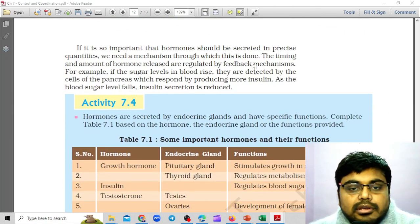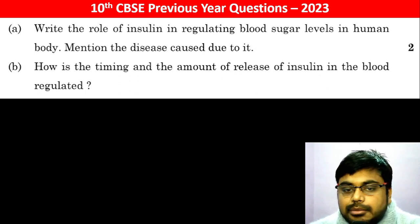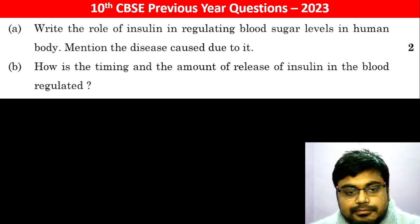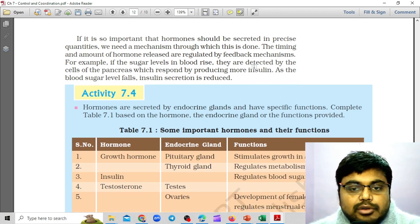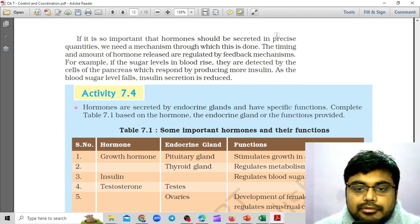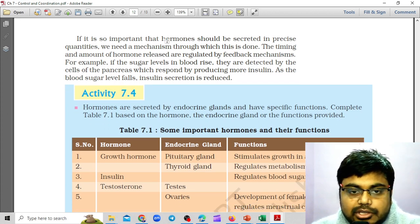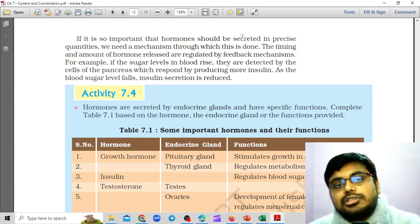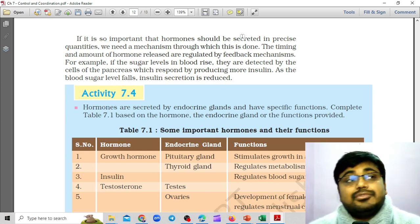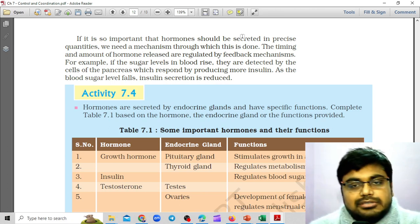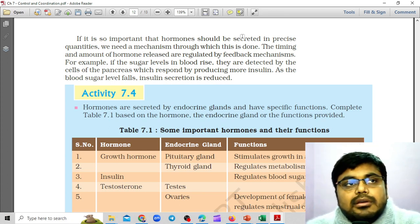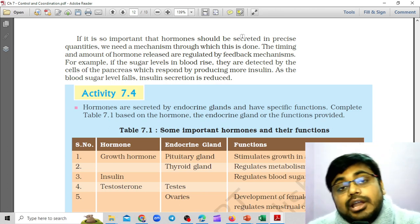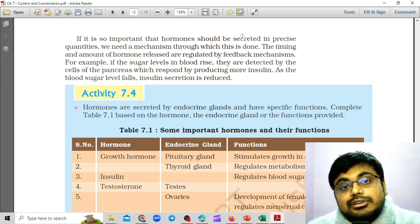How is the timing and the amount of release of insulin in the blood regulated? This is regulated by a feedback mechanism. If the hormone should be secreted in precise quantities, we need a mechanism through which this is done. Hormones are actually released in very small quantities.